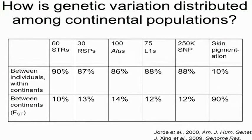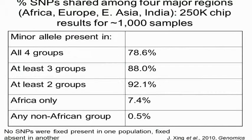To put that in perspective, we can compare that with skin pigmentation, which varies a great deal among continents and has been subjected to a lot of natural selection, where the great majority of variation is actually found between continental populations. Looking at SNPs from a 250K chip, we can ask what proportion of minor alleles are shared among populations — the great majority typically are. The only continent that has very many population-specific SNPs, about 7 percent, is Africa.